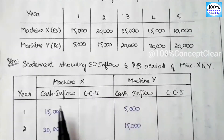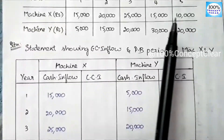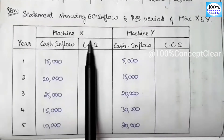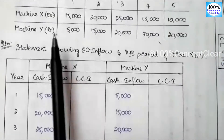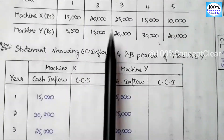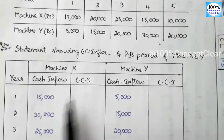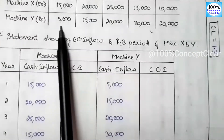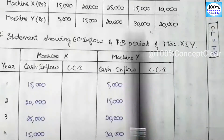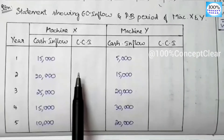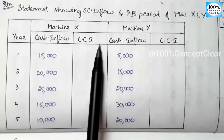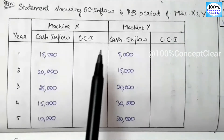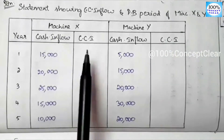In the next table, look at the table. In the years, we have a total of 5 years for both Machine X and Machine Y. What is cumulative cash inflow? The cash inflow is cumulative — cumulative means we add each year's value cumulatively, adding each year to the previous total.